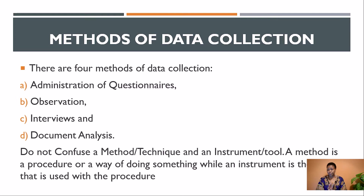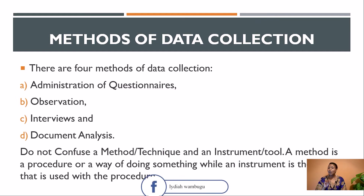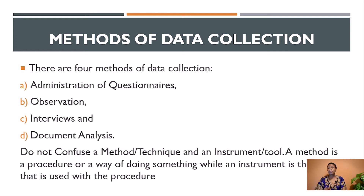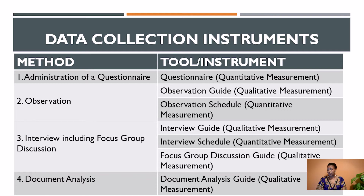We have four main methods of data collection: administration of questionnaires, observation, interviews, and document analysis. When you talk about a method, you talk about a way of doing something — it's the procedure. But the instrument or tool is the device used with that procedure. In the research proposal, we write data collection instruments, not data collection methods. We discuss instruments, and those instruments must have coherence with the method. From the four methods, we have a table that helps identify the instruments.